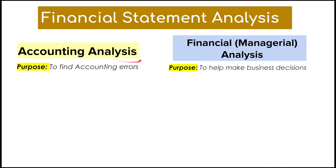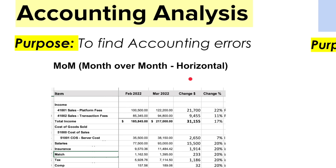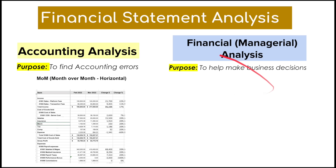As an overview of financial statement analysis, there are two main categories. First, there is accounting analysis, whose purpose is to find accounting errors. Then there is financial or managerial analysis, whose purpose is to help make business decisions. With accounting analysis, the most common type is month-over-month analysis, which we call horizontal analysis — we're going horizontally left to right, comparing one period to the next, looking at the change and the change percentage.